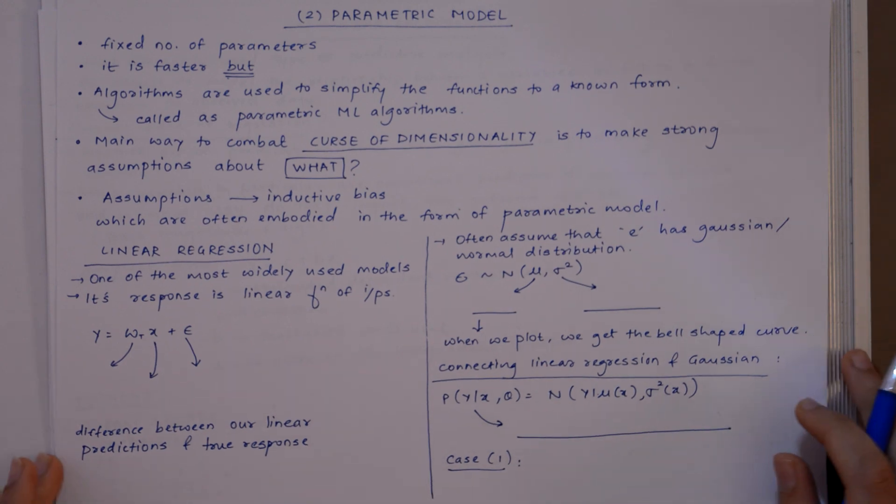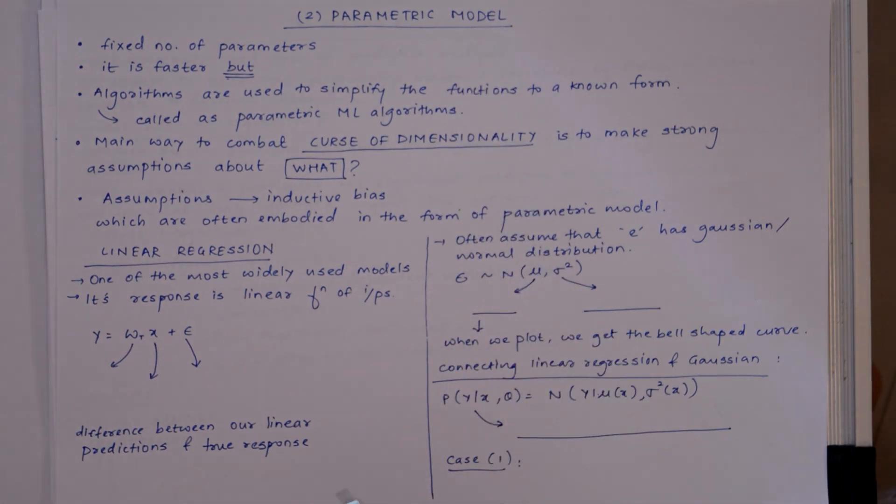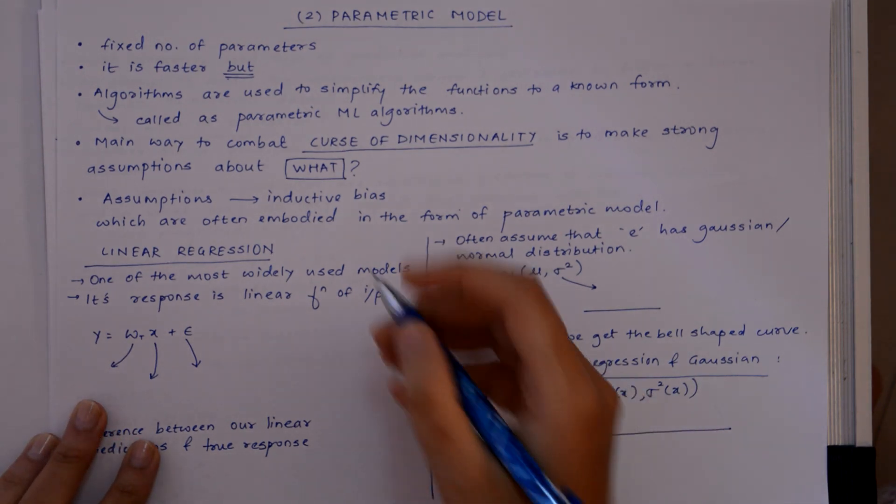So in case of parametric model, we have a fixed number of parameters. This model is faster to use, but the only constraint is we have to make strong assumptions.